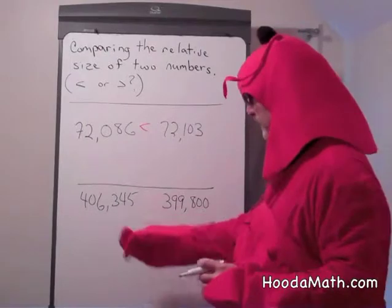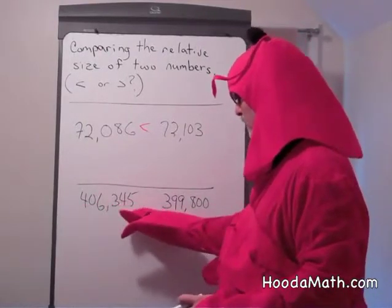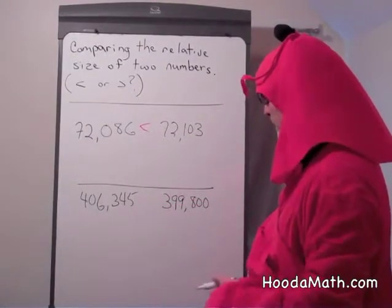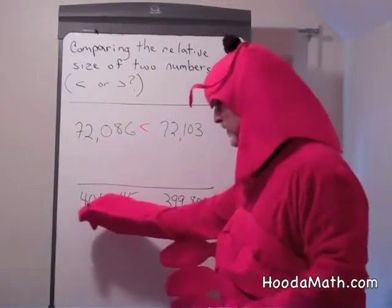Let's look over here. 406,345, 399,800. Once again, they both have the same amount of digits. They both have six digits.